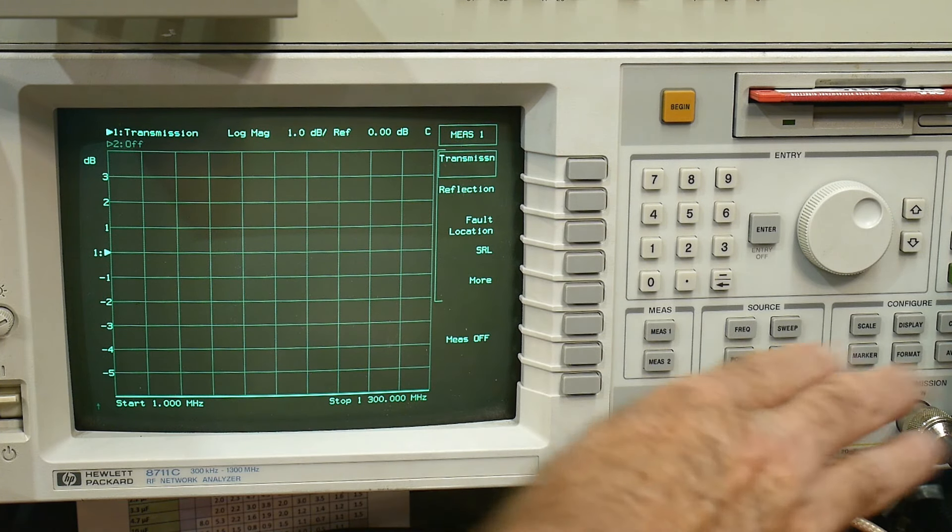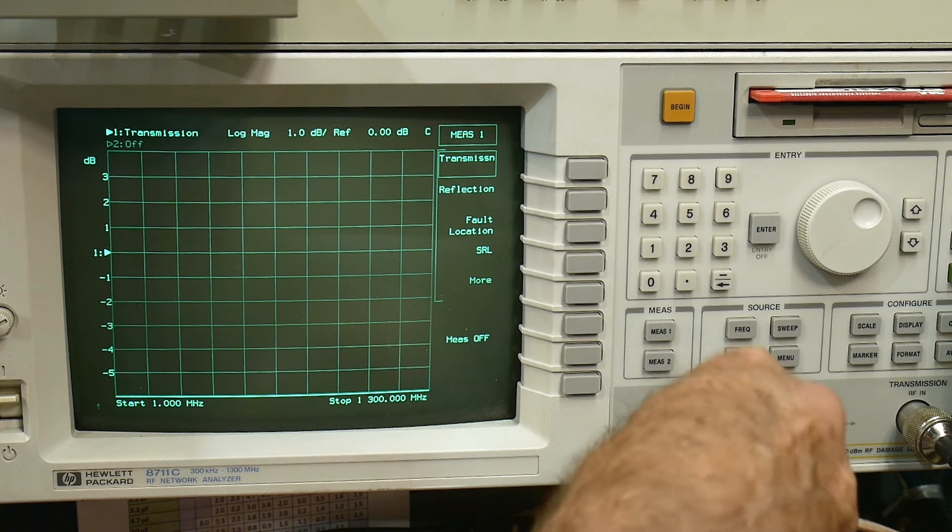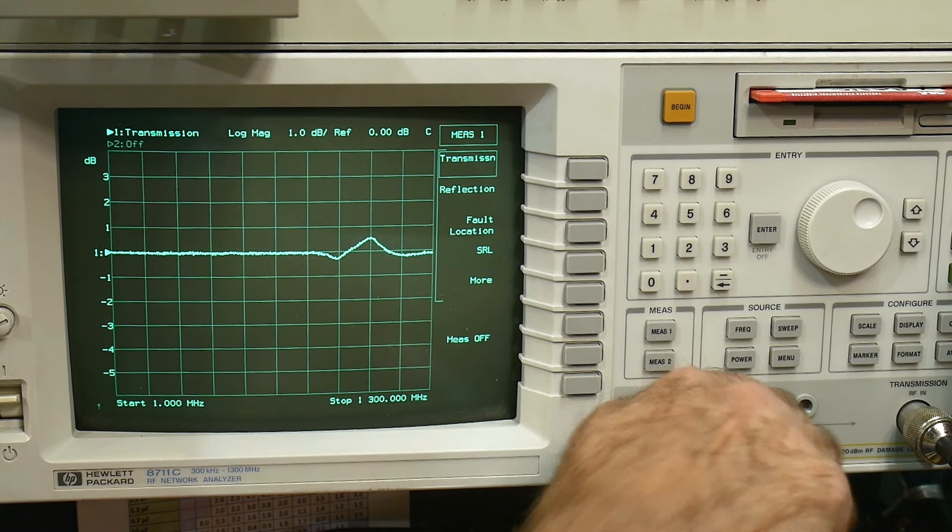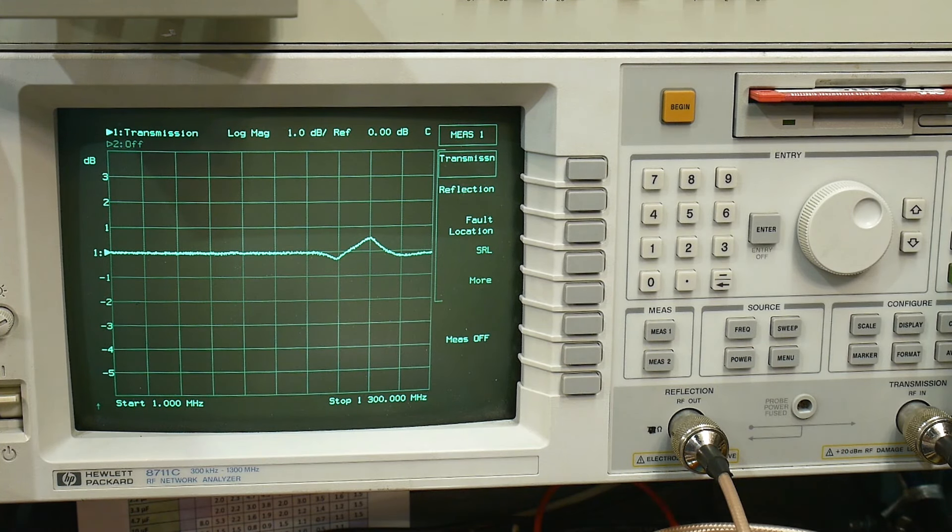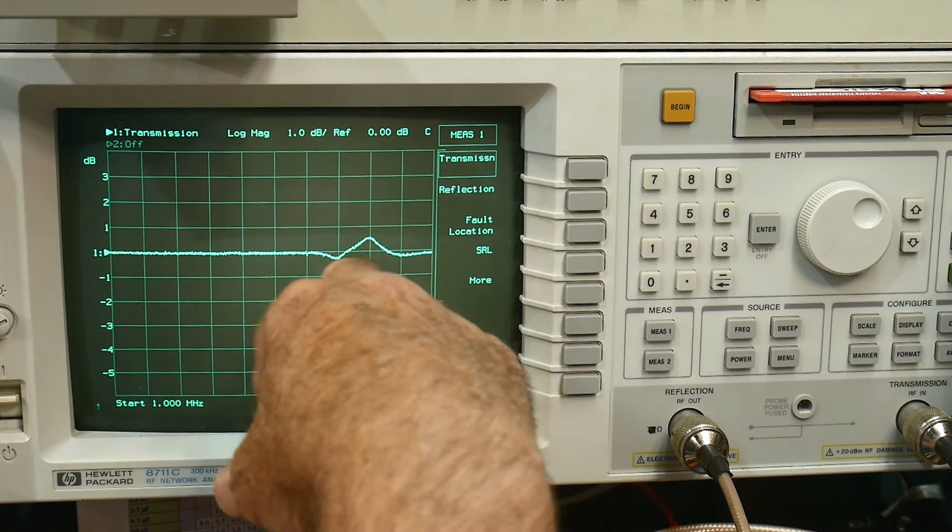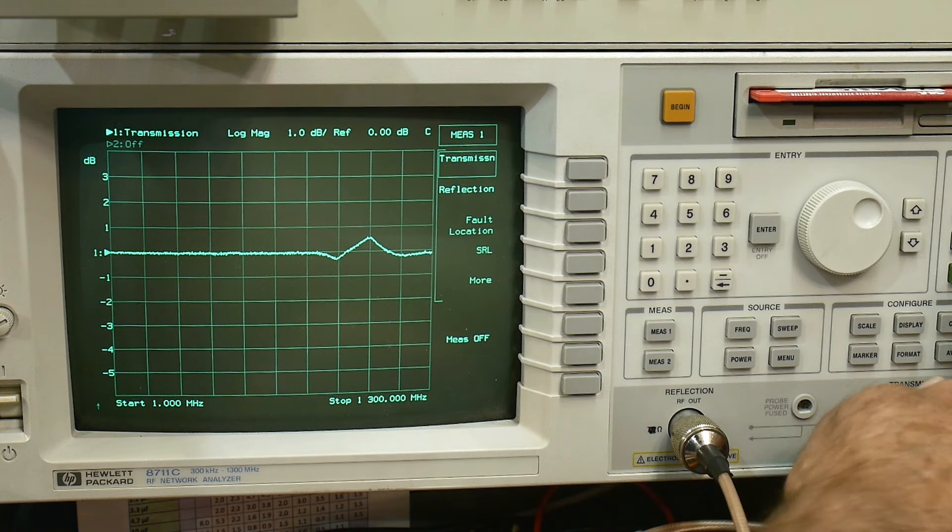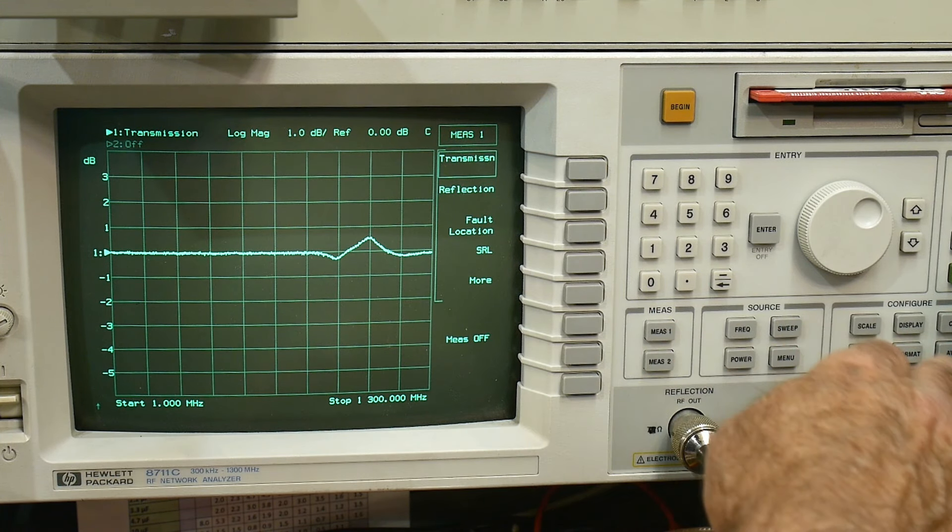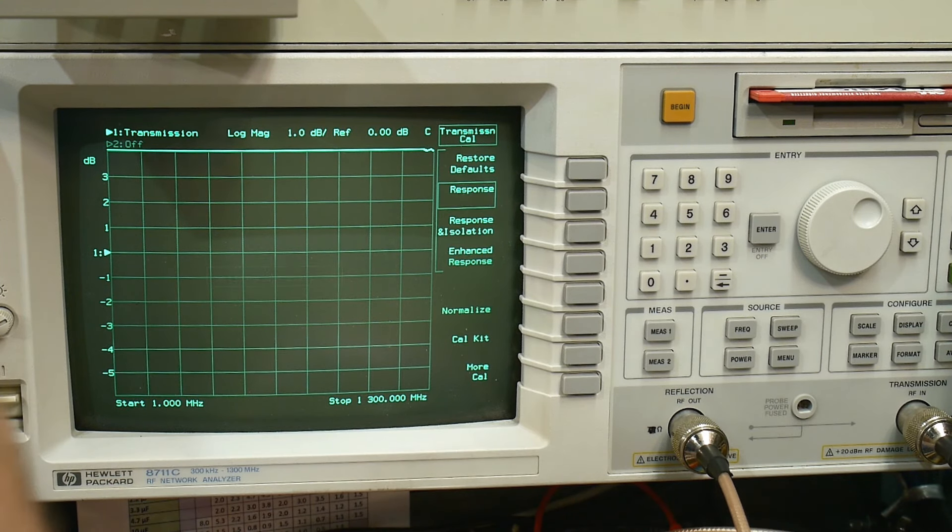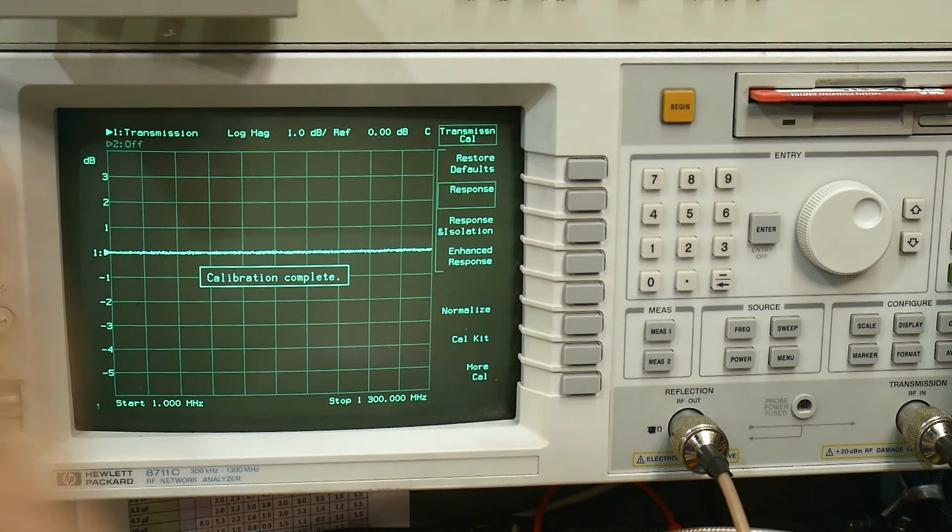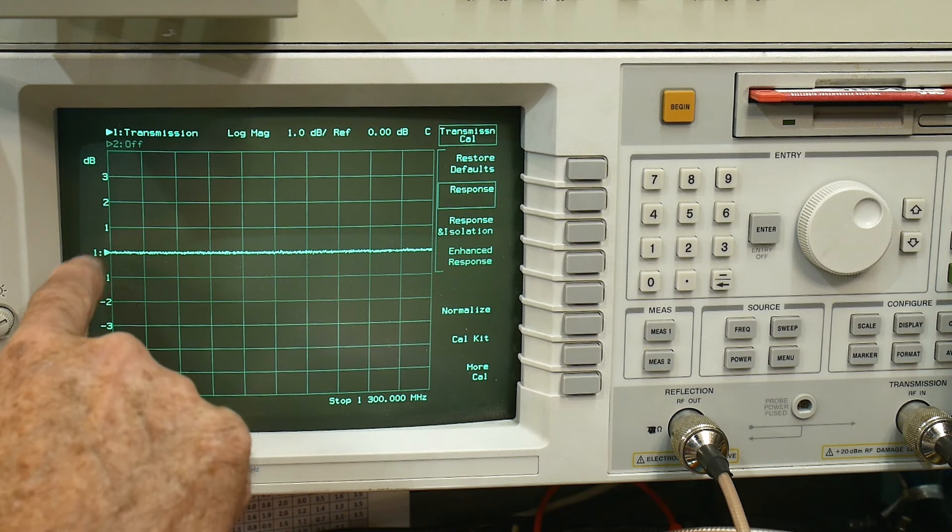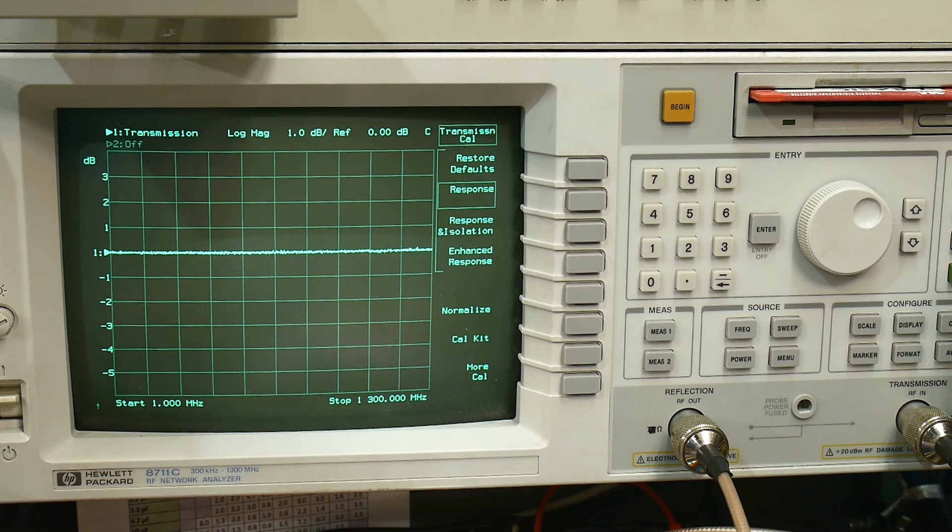Okay, we're going to do a transmission measurement, S21. So we're going to put a coax cable here with N connectors and that's just going to short the input to the output. And I just turned this thing on and you can see this little whoop-dee-doo here and that's kind of where it shifted gears inside. So we need to calibrate that out. Let me go ahead and do response cal, page the standard. There we go. We've just zeroed it out. It's just a zeroing function. So we're set up for one megahertz to 1.3 gigahertz and this is one dB per division.